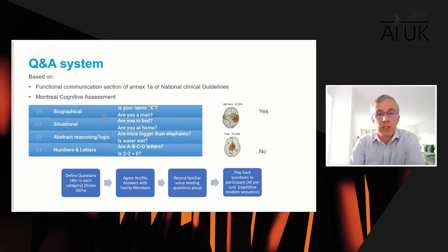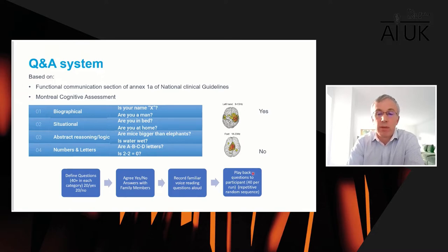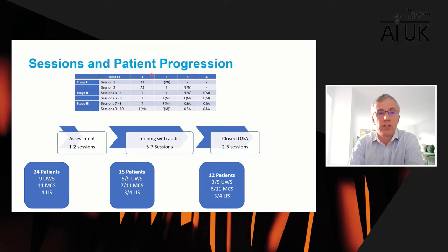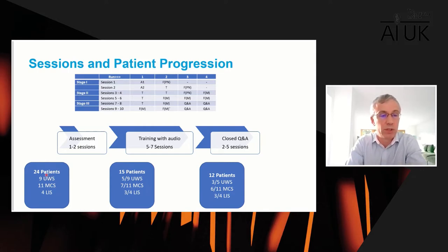Stage three evaluates patient responses to closed questions — biographical and situational questions in different categories, agreed with family members. Family members read the questions aloud, those recordings are played back repetitively in random sequence, and participants respond by imagining one movement or another. We then look at the average response to questions at the end of the session. To date we've done 24 patients — 15 made it through to stage two with feedback, and 12 made it through to the Q&A sessions.